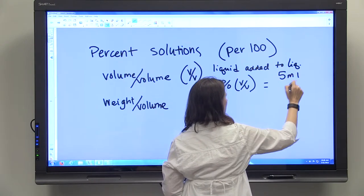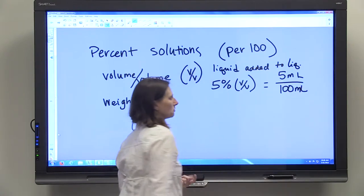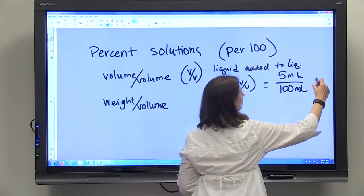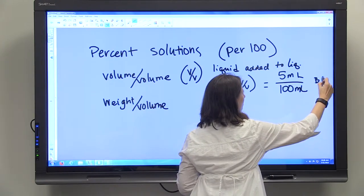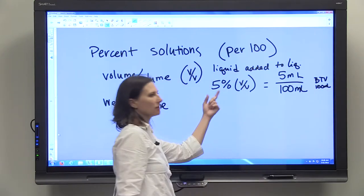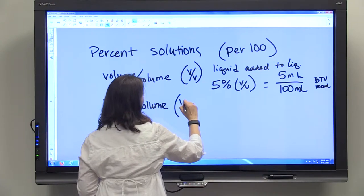five ml's out of a hundred ml's is our 5%. So we'll add 5 ml's and bring to volume of 100 ml's to get a 5% volume to volume.